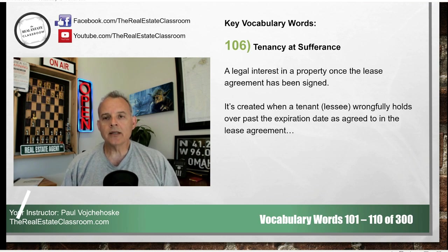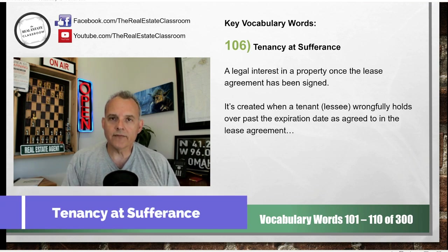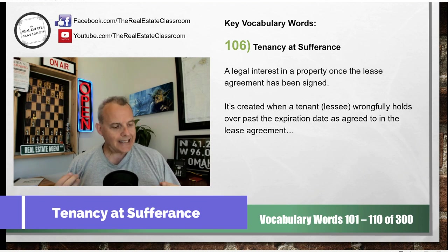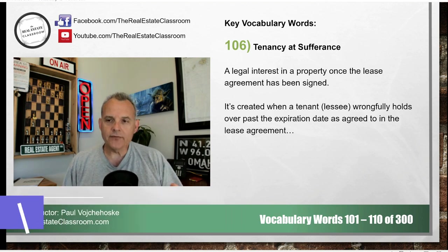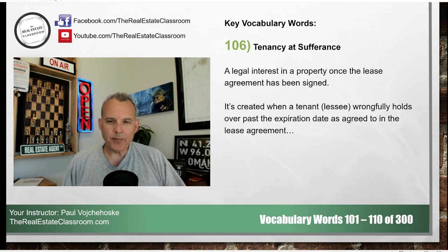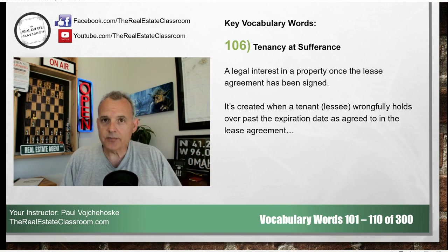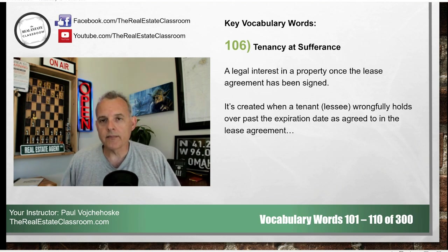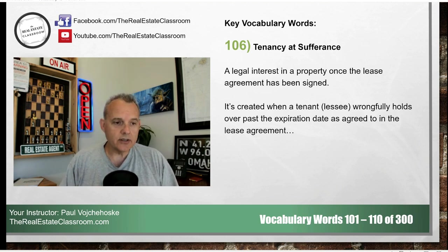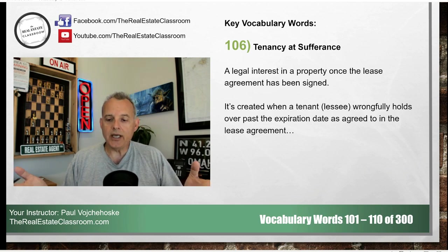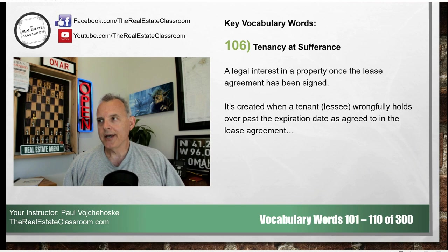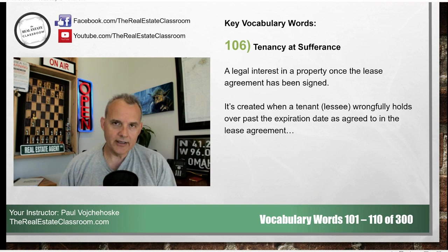Number 106: tenancy at sufferance. Sufferance is the key term here. It is created when the tenant wrongfully holds over or stays past the expiration date agreed to in the lease — whether that's a fixed expiration date or a month-to-month where notice has been given to move by the landlord and the tenant doesn't move. In this legal situation, the landlord typically has to go into court and evict the tenant.